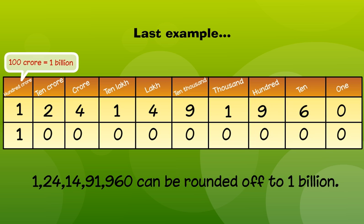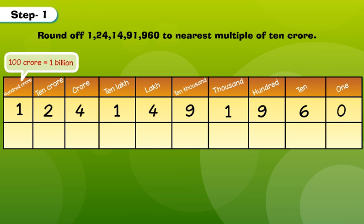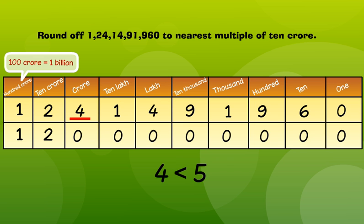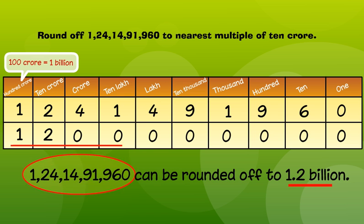Let's do the same. Step 1: Look at the multiple the number needs to be rounded off to. Step 2: Underline the digit in the crores place. Step 3: The underlined digit is less than 5, so we replace all digits on the right side to 0. Thus, 1,024,014,091,960 can be rounded off to 1.2 billion people.